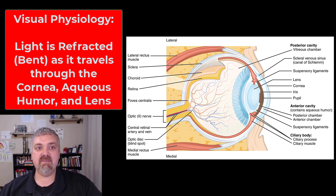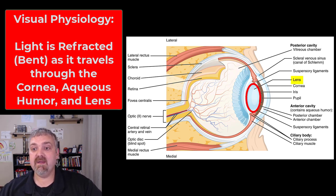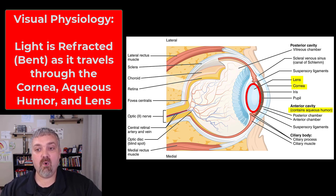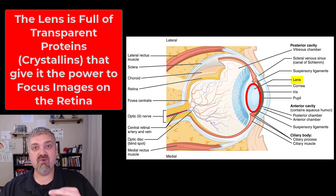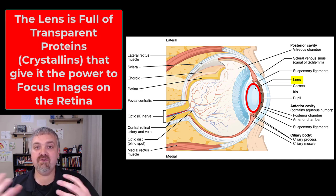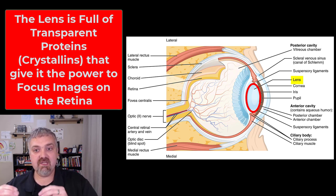Light has to be bent, or refracted, as it passes through the eye. When we think about bending of light rays, we think of the lens — but about 70% of this light refraction is actually occurring at the cornea and the aqueous humor of the eye. The lens, which is full of these cool transparent proteins called crystallins, is going to finish off the refraction to focus the image on the retina, on the photoreceptors.